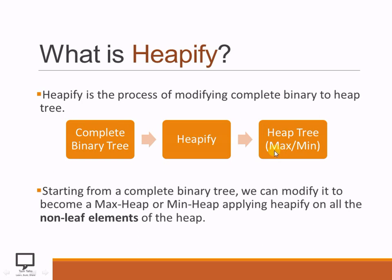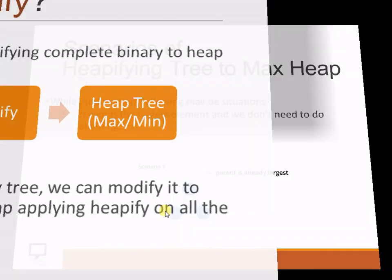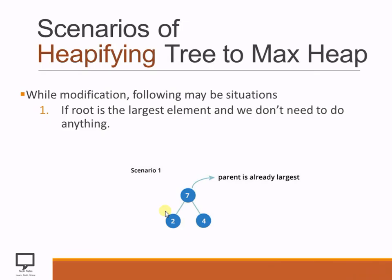If Max Hip is there, the parent node must have a higher value than the children. If Min HipTree is there, the parent node will have a lesser value than the children. Starting from a complete binary tree, we can modify it to become a Max Hip or Min Hip by applying the Hippify on all the non-leaf elements. Now there are three different scenarios that we need to take care of while Hippifying the complete binary tree to Max Hip.